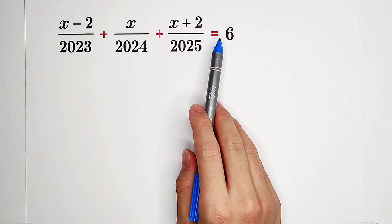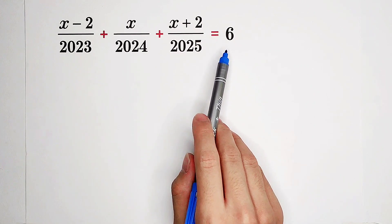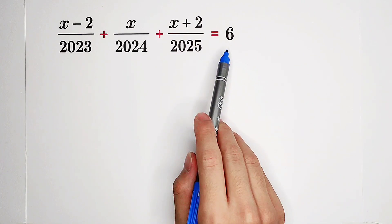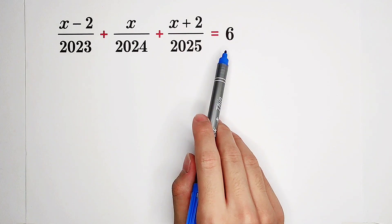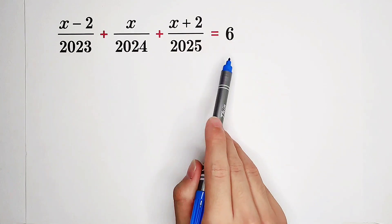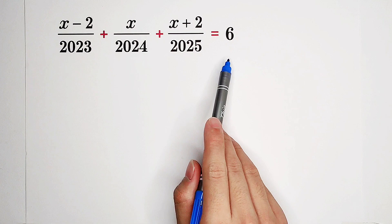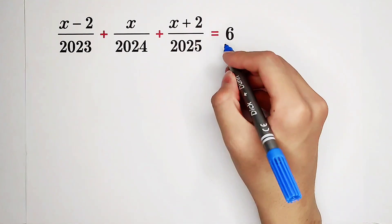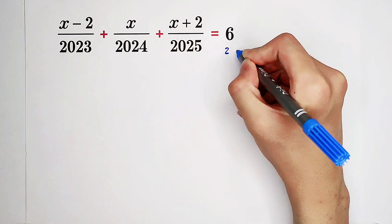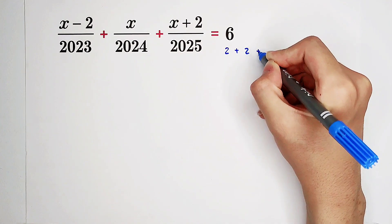Have a look at the right-hand side: six. The idea is we can separate this six into three twos. What do I mean? This six can be written as two plus two plus two.